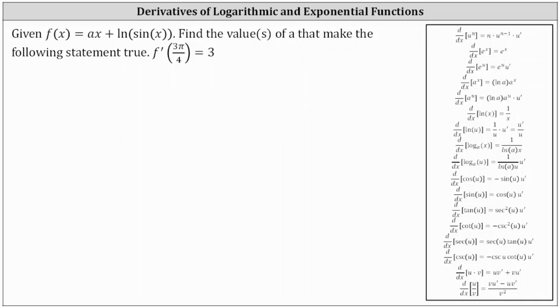We're given f of x equals ax plus natural log sine x, and we're asked to find the value or values of a such that the following statement is true: f prime of three pi divided by four equals three.